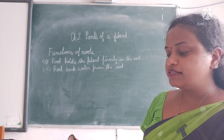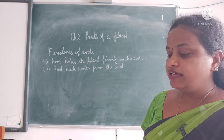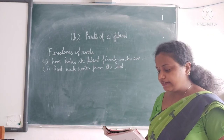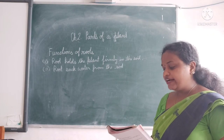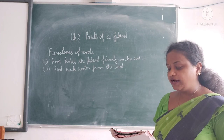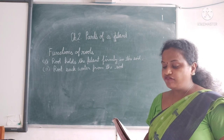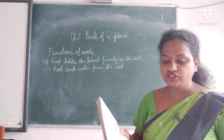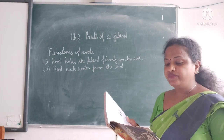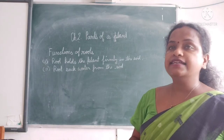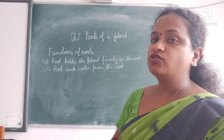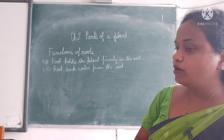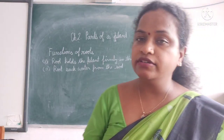Roots of some plants store extra food in them — that is why they become swollen and fleshy. Radish, carrot, sweet potato, and beetroot are some examples. We eat these roots as vegetables. That's all about the parts of a plant and the root of a plant. Thank you, students.